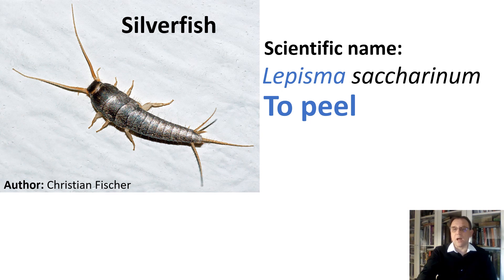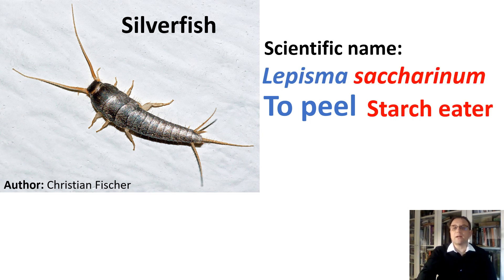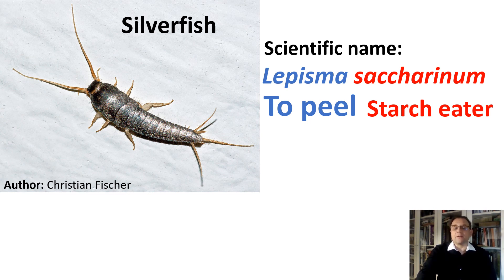Look at this organism — its common name is silverfish. Is it a fish? No. It is an insect. The scientific name is Lepisma saccharinum. Lepisma means to peel, and saccharinum literally means starch eater. You are more likely to meet this insect if you leave spilled sugar or starch in your kitchen storage cabinet.